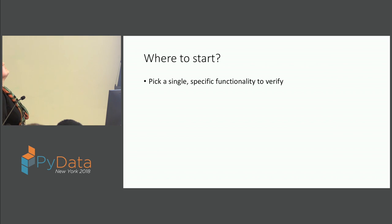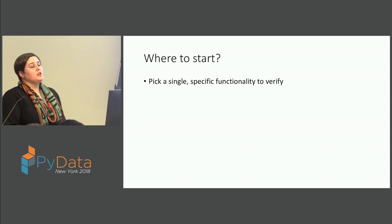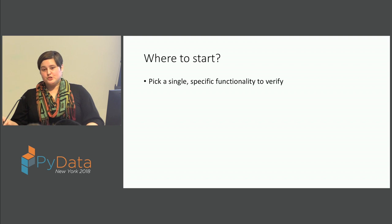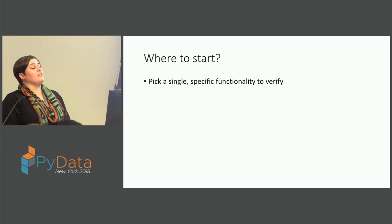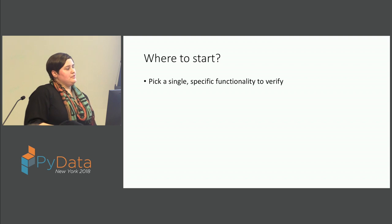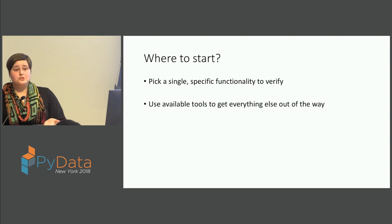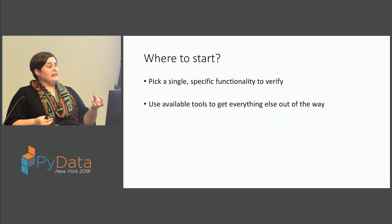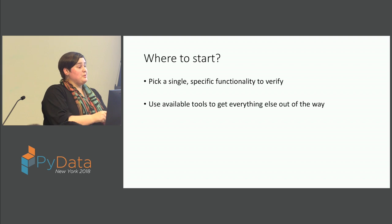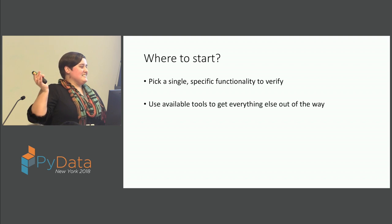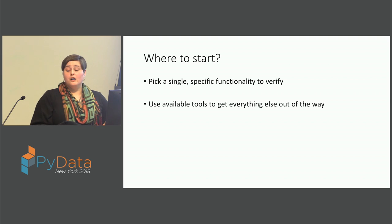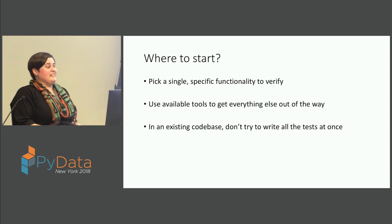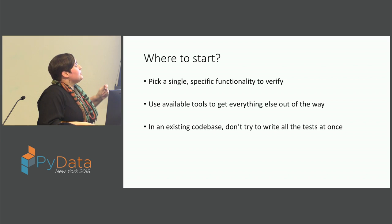So where do we start? When you're going to start writing unit tests — whether working with a mature codebase that's never been unit tested, or starting a new package from scratch — you want to start really small. You want to start with a particular specific functionality that you want to verify is actually happening the way you think it is. You want to use all available tools to get everything else out of the way. Unit testing is all about isolation — taking one defined functionality, ignoring everything else, and asking: is this piece working the way I think it is? Then you do that for all of your pieces eventually, and you gain a lot of confidence in what's happening overall.